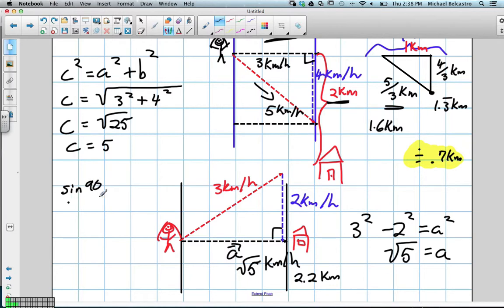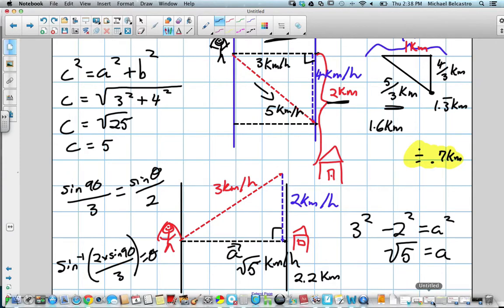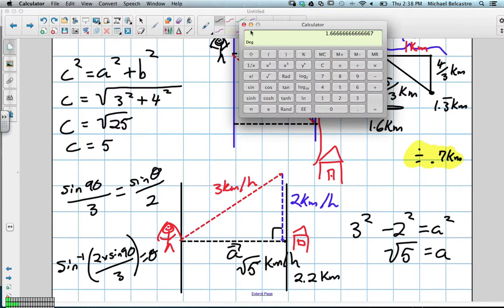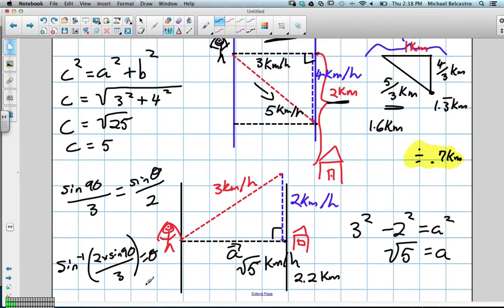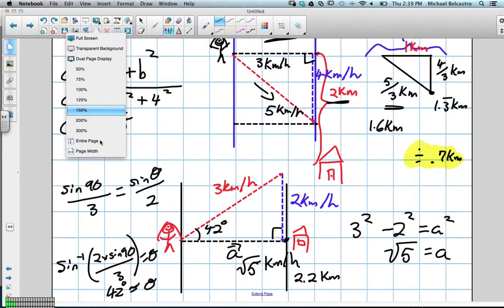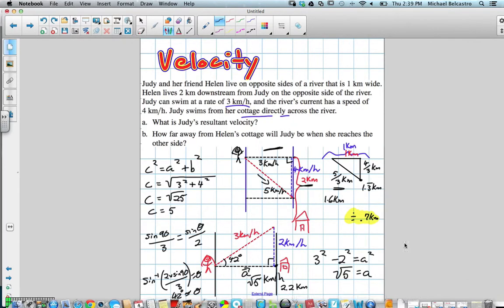Sine, this is 90 over 3, is equal to sine theta over 2. So we're going to have sine inverse of 2 times sine 90 divided by 3 will give us our theta. Let's see if we can do that all in one shot here. Somebody got it? 42? Great. That's quite an angle she has to swim at. So theta equals approximately 42 degrees. So she now has to swim at an angle of 42 degrees. That's quite an angle. Just to get horizontal to where she was standing before.